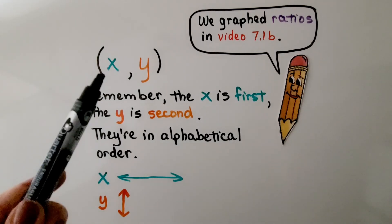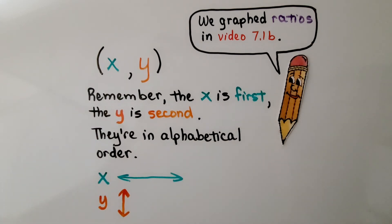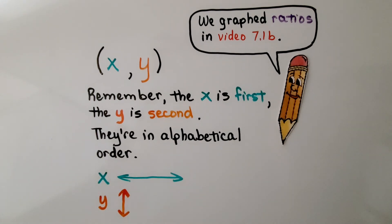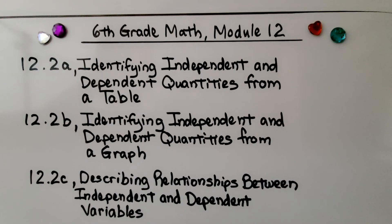Remember: x is the first value, y is the second value in an ordered pair — they're in alphabetical order: x, y, z. X is horizontal, y is vertical, and 'y goes to the sky' — it goes up. There will be a link to video 7.1b where we graphed ratios. We're finished with lesson 12.1 and moving on to 12.2, which is split into three parts — the first part is identifying independent and dependent quantities from a table.